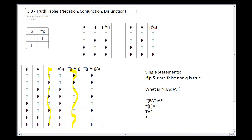Now I have true and false, which gives false overall. I can verify this against the full truth table: P false, Q true, R false corresponds to a specific row — following that row across confirms the answer is false. If I had already built the full truth table I wouldn't need this shortcut, but if I only need one specific answer I can evaluate it directly without doing all eight rows.